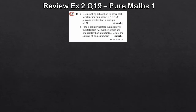Now we move on to the final question — another proof by exhaustion. This time we're told to use proof by exhaustion explicitly. We want to prove that for all prime numbers P, where P is between 3 and 20, P squared is 1 greater than a multiple of 24. All we need to do is write down the possible values P could be and show it's true for each one.